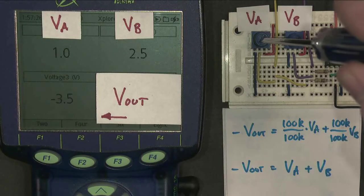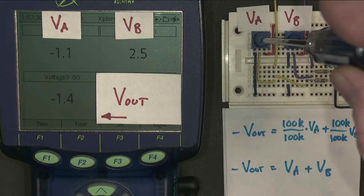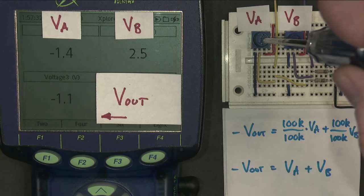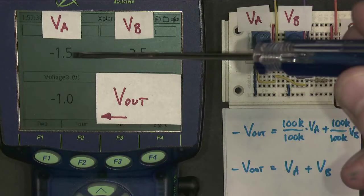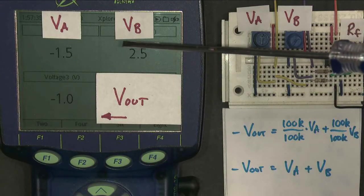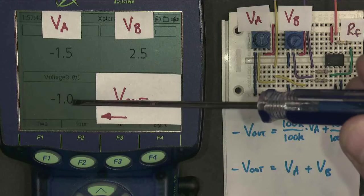If I make one of them negative, then it adds up as you might expect. So 2.5 plus minus 1.5 is plus 1. So the output is minus 1.